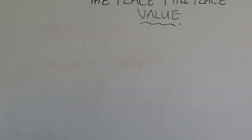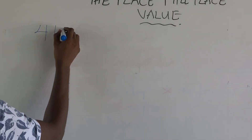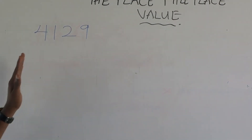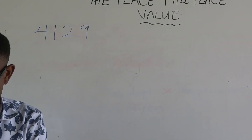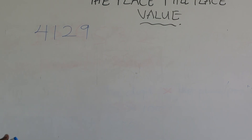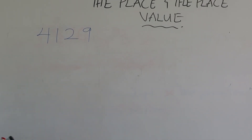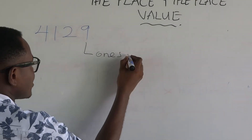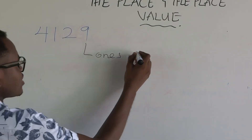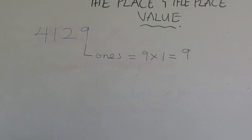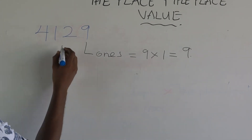For the number 124129, we are going to write the place and the place value of each and every digit. What is the place of 9? The place is ones. What is the place value? Nine times one gives you nine.